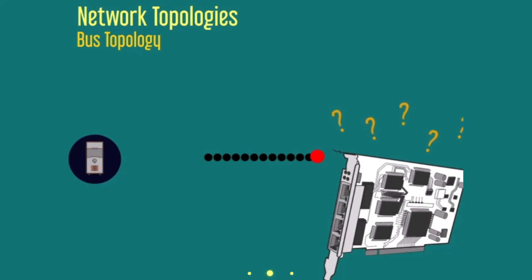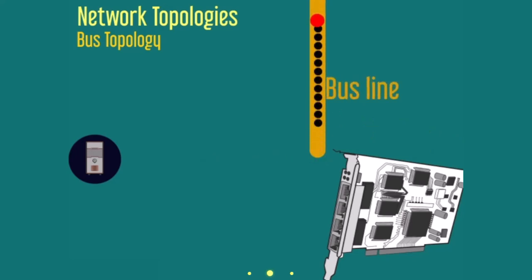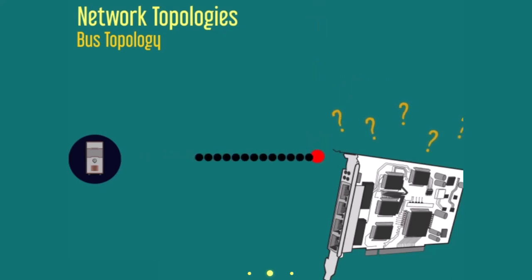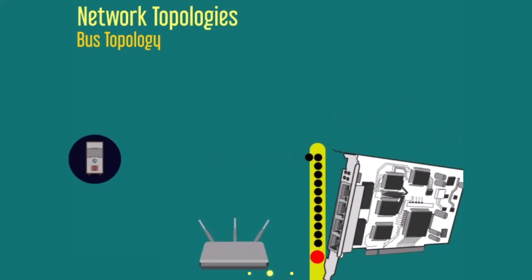If the data is staying in the same network, it's placed on the bus line, and the connecting nodes accept or reject it based on its address. If the NIC determines the packet is intended for a computer on another network, it's transferred out using a router.